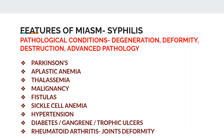Pathological conditions seen in syphilitic miasm are those of degeneration, deformity, destruction, and advanced pathology. Conditions include Parkinson's disease, aplastic anemia, thalassemia, malignancy, fistulas, sickle cell anemia, hypertension, diabetes with gangrene and trophic ulcers, and rheumatoid arthritis with joint deformity. All such diseases come under syphilitic miasm.